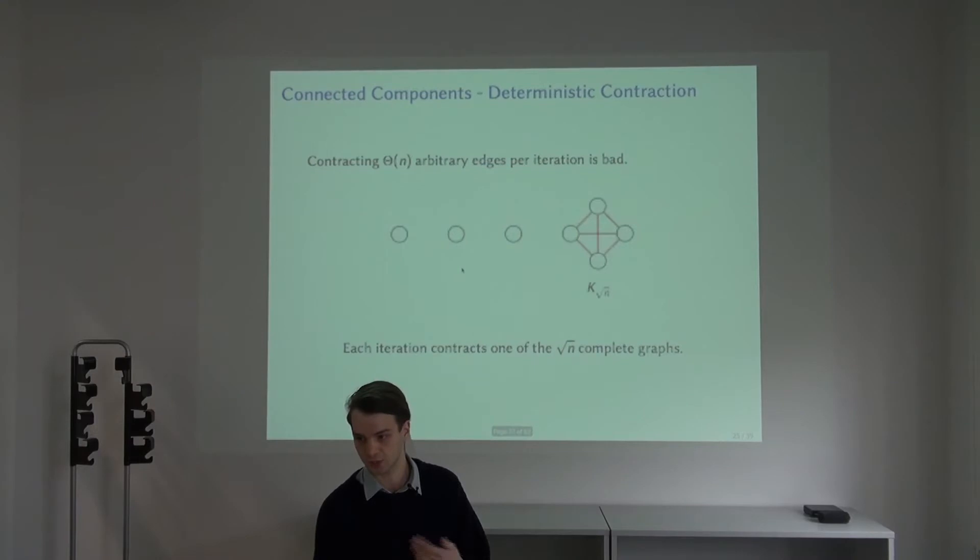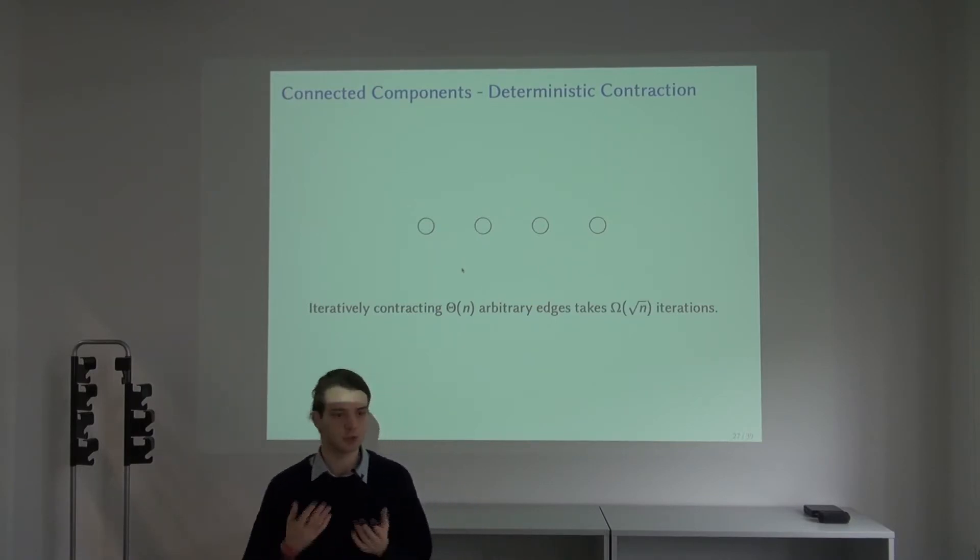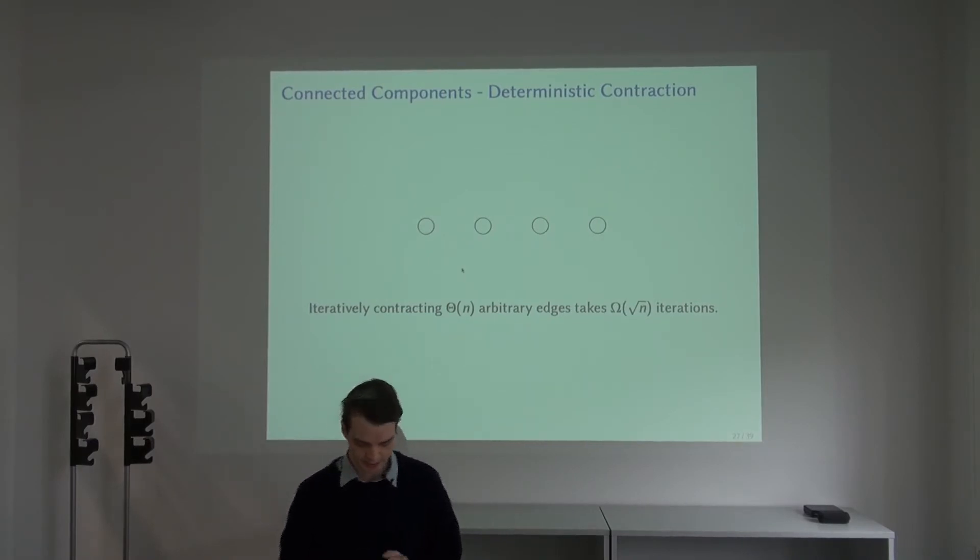Because there are square root of them, it would take square root of n iterations with a worst case choice of edges to contract. But notice that this seems like a very special choice, an unlucky choice that all of these edges would end up in the same component. We might have the intuition that most choices would lead to much better results than this worst case instance.